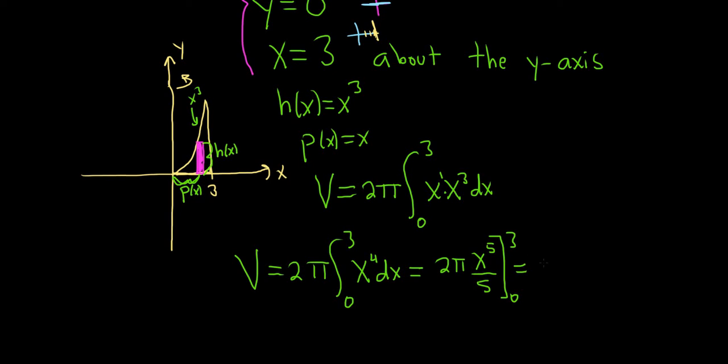Good stuff. So this is 2 pi over 5, x to the 5th. And we're going from 0 to 3. Just rewrote it there. Put the 5 on the outside.